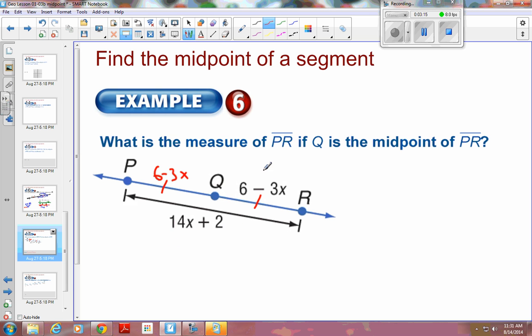So you can either write 2 of them added together or you can write 2 of the 6 minus 3X's would be equal to the 14X plus 2. They are the same length, they should add together and give you the big one. So this would become 12 minus 6X equals 14X plus 2. Get your X's together. 14X is bigger than negative 6X, so I'm going to add 6X to both sides.